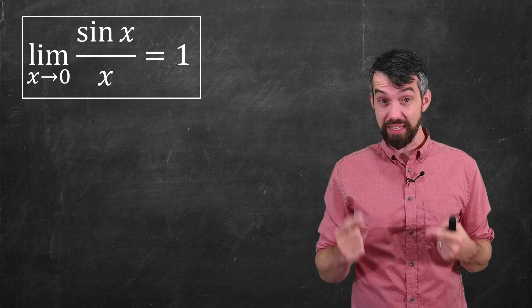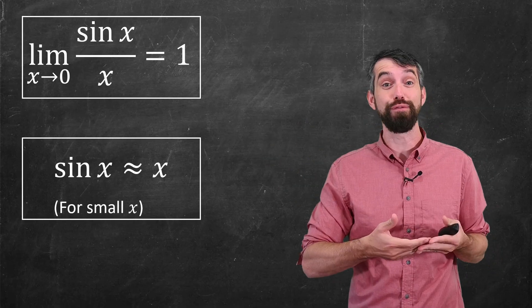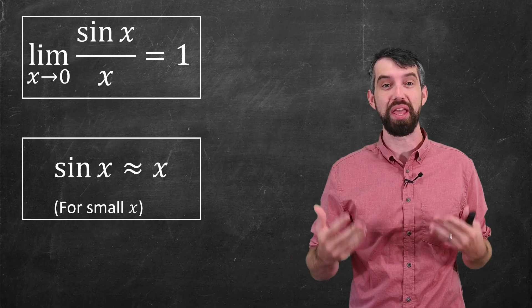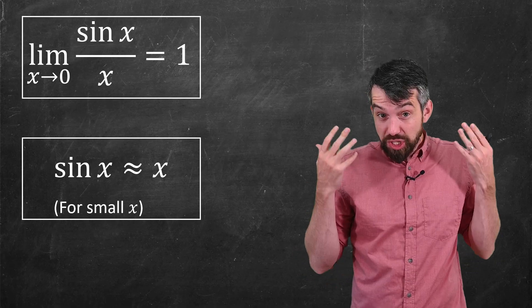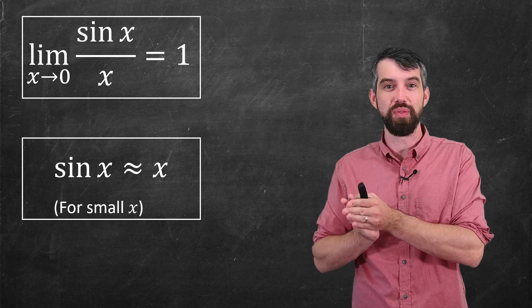One reason this limit is so helpful is that I can restate it in this form as the so-called small angle approximation, which says that for small values of the angle x, sine of x and x are about the same.